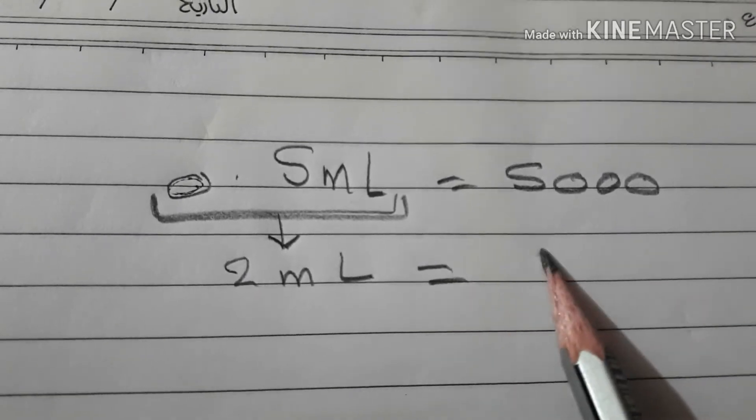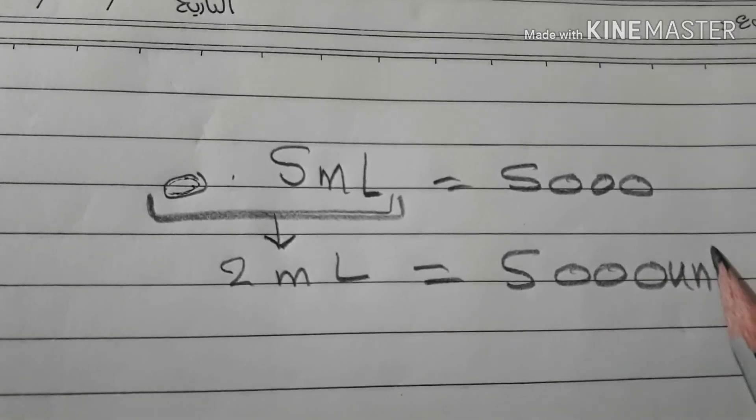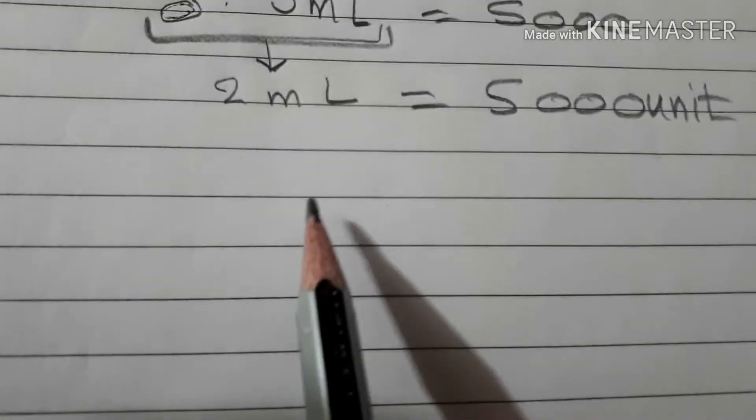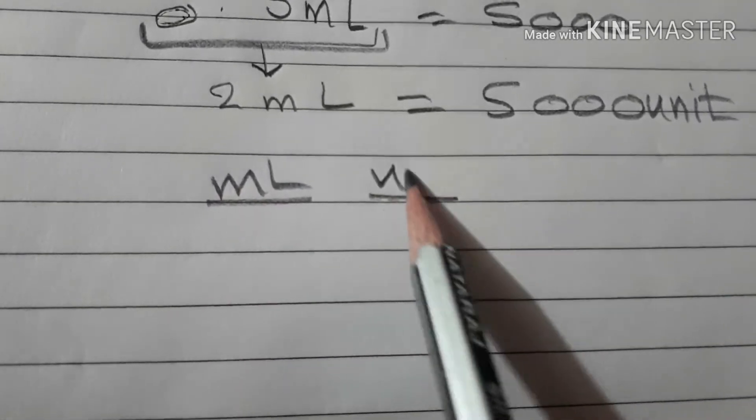2 milliliters equals 5000 units. We will do the proportion between the milliliters and the units.